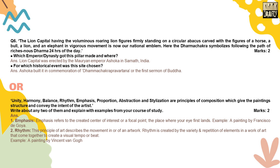In question number six, you have to write two questions on the lion capital of Sarnath. Which emperor or dynasty got this pillar made and where? The answer is: the lion capital was erected by the Mauryan emperor Ashoka in Sarnath, India. Next question: for which historical event was this site chosen? Ashoka built it in commemoration of Dhamma Chakra Parvartana, or the first sermon of Buddha.